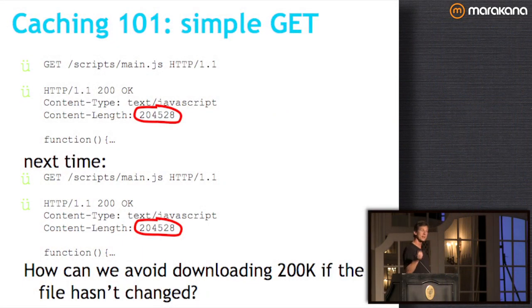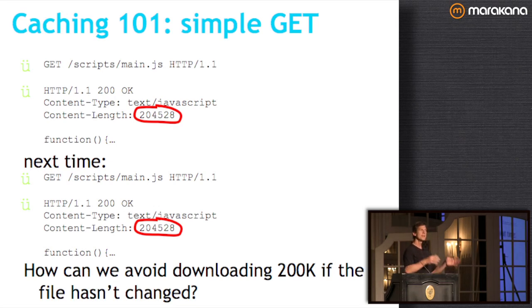Before going further, let's do a quick primer on how HTTP caching works. Suppose we're requesting main.js. We send a simple GET request and get back a 200 OK response with the content type text/JavaScript — about 200K of JavaScript. That's a simple GET. The next time the user goes to this page — a minute or a day later — they'll make another GET and get the same response. We just downloaded 200K twice, probably the exact same bytes — that's not efficient.